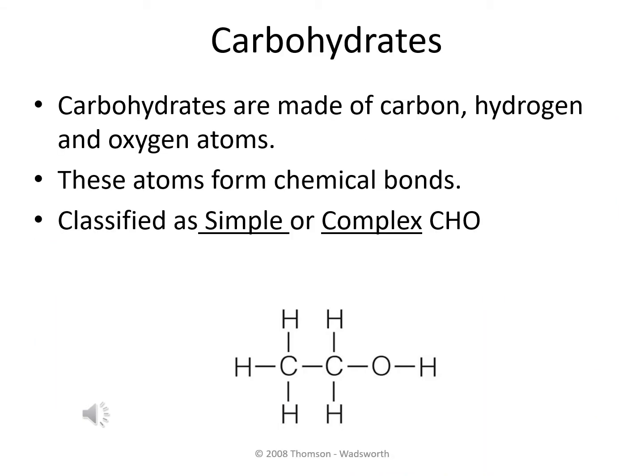The first thing we're going to take a look at is the chemical makeup of carbohydrate. Carbohydrates are made up of carbon, hydrogen, and oxygen atoms. They're linked together through chemical bonds, and they're classified as being either simple or complex. Simple carbohydrates are going to contain smaller amounts of these specific elements, whereas the complex carbohydrates are going to contain larger amounts.